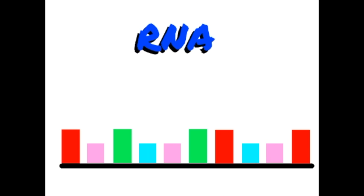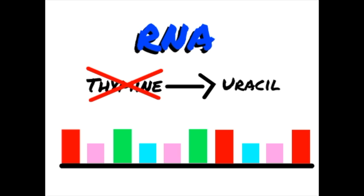RNA structure basically looks like what DNA would if you split it in half. It doesn't spiral in a double helix and is just a single strand. The only difference is that RNA doesn't have thymine; the nitrogenous base that replaces it is called uracil.